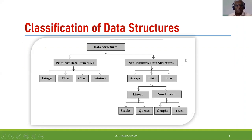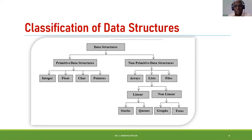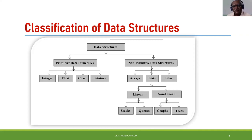How do we classify data structures? The fundamental classification is into primitive and non-primitive. Under primitive we have integer, float, char — common built-in types. Under non-primitive we have arrays, lists, and files. Under lists we have linear and non-linear: stack and queue are linear, while graph and tree are non-linear. So arrays, stack, queue, graph, tree, and list — six fundamental data structures — will be considered for application purposes.